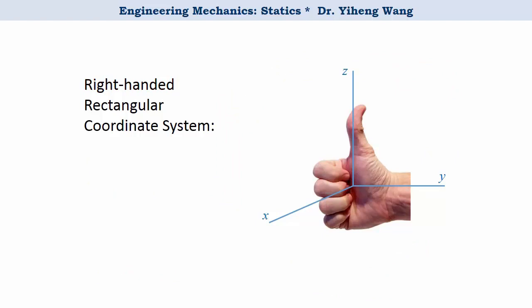Which means that if you roll the four fingers in your right hand from the positive x direction towards the positive y direction, as shown in this image, then your thumb will point towards the positive z direction.